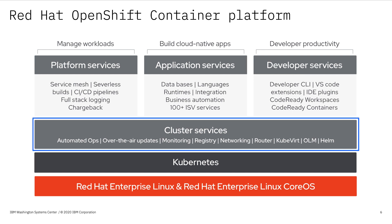OpenShift Container Platform includes different solutions for different tasks, such as an integrated container registry, a software-defined network, monitoring and logging, role-based access control, and everything else that an organization would need in order to have an enterprise container platform for development of cloud applications and management of container-based workloads. OpenShift is mainly Kubernetes with a bunch of other packages and tools wrapped around it, with validated integrations between each component.